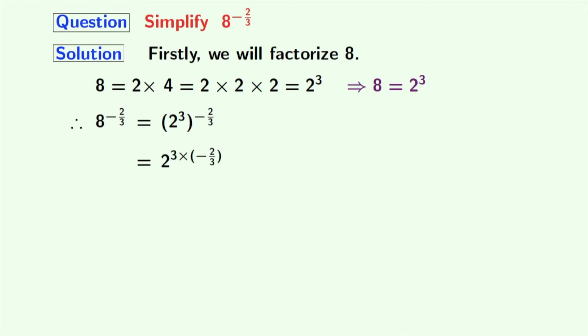Now, we will rewrite this as 2 power 3 times minus 2 by 3. We have used the rule of a power m whole power n is equal to a power m times n. Here, a is 2, m is 3 and n is minus 2 by 3.